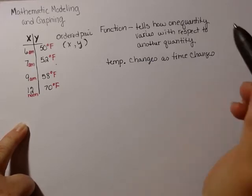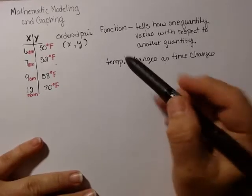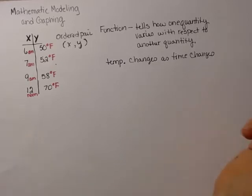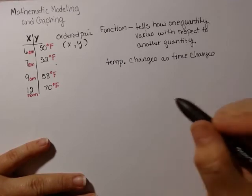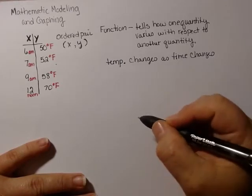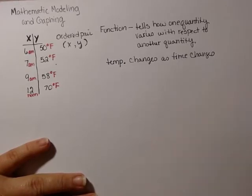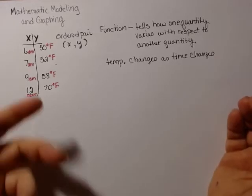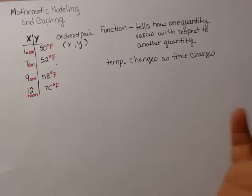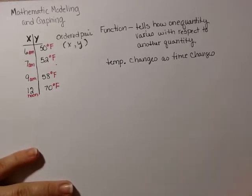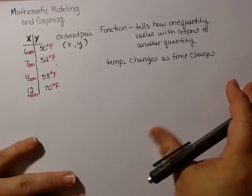So remember, we have two different quantities. We have temperature and we have time. Those are our quantities. So you have independent and you have dependent variables. Dependent, one depends on the other. Independent, you hear about independent people. They don't rely on anybody else. They can do things by themselves. Those are independent. So kind of the same thing.